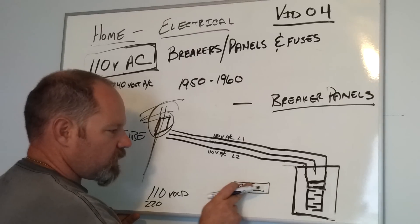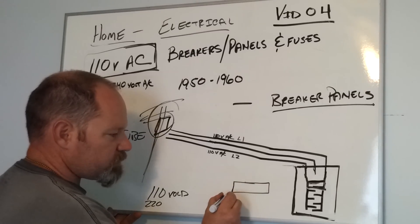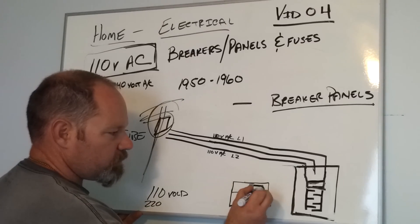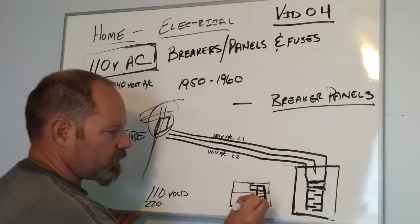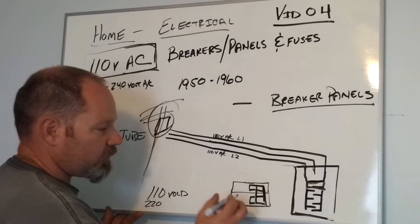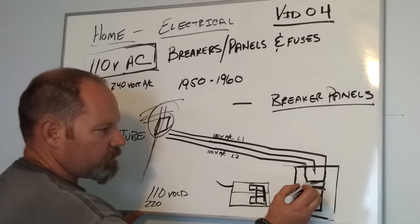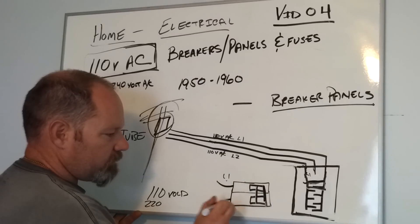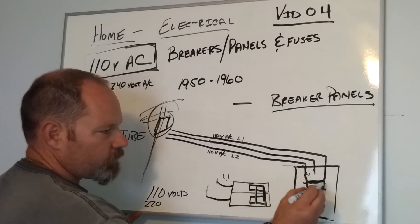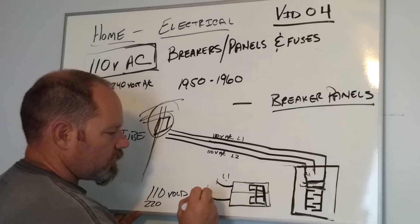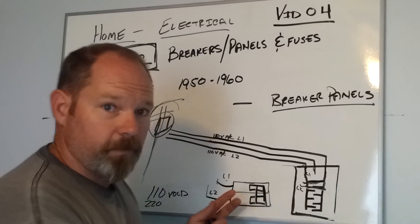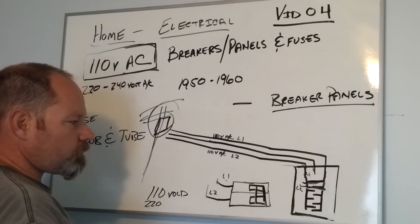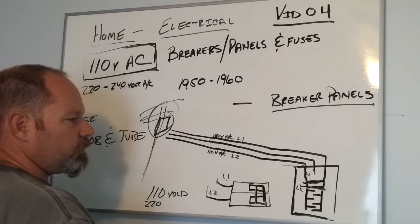A double-pole breaker is twice the size of a single-pole and has two switches that are mechanically connected, so they turn on and off together. What you end up with is a line coming off L1 and another line coming off L2. So now you're dealing with a 220 volt breaker and higher voltage.